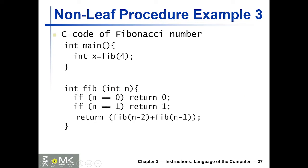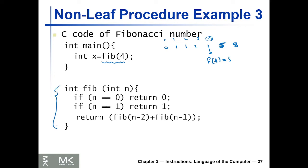Here is an example of a main function that calculates Fibonacci of 4. The series is 0, 1, 1, 2, 3 — so Fibonacci of 4 is 3. Here is the Fibonacci recursive function: if we reach Fibonacci of 0 or Fibonacci of 1, we return 0 and 1 respectively. Otherwise, we return Fibonacci(n-2) plus Fibonacci(n-1).